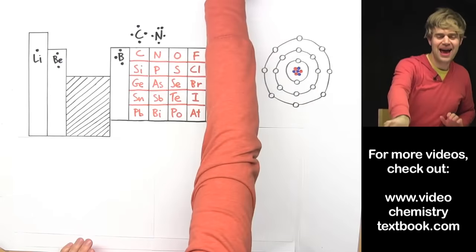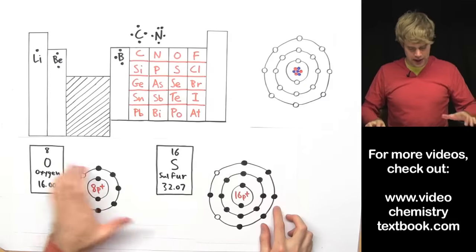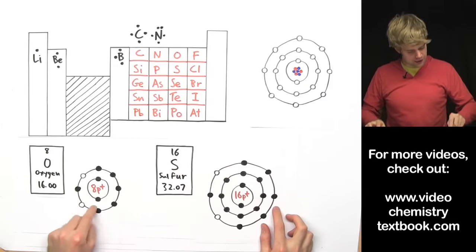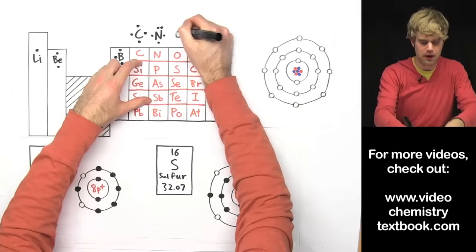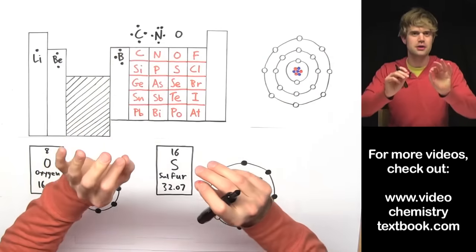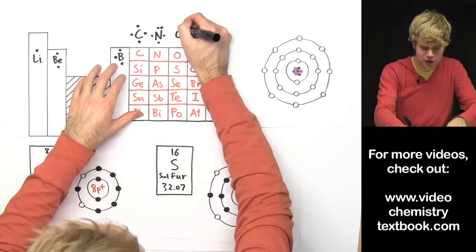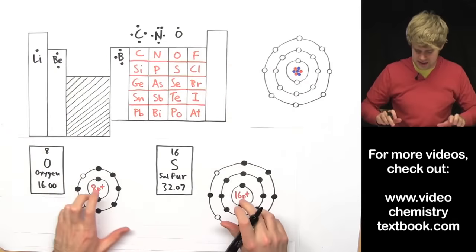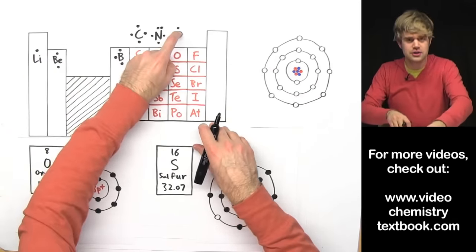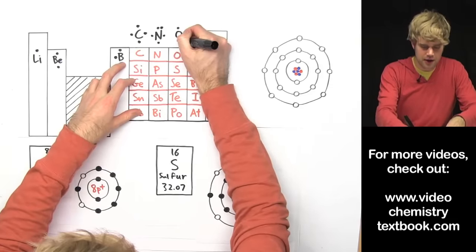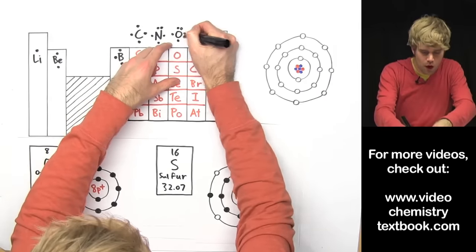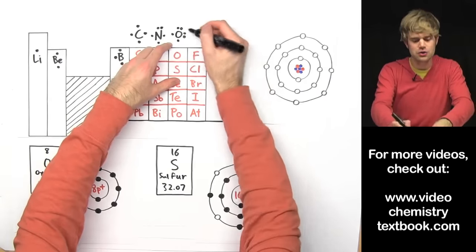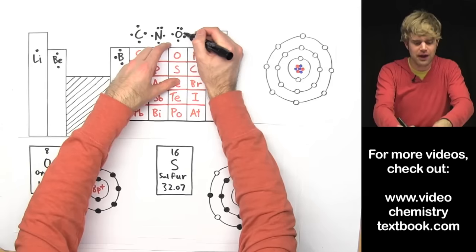Oxygen and sulfur each have six valence electrons. Using oxygen as the example, the dot diagram starts with a dot on top, bottom, left, and right — then we double up the top and the right. So going clockwise: up, down, left, right, and then around. Six valence electrons for everything in this column.